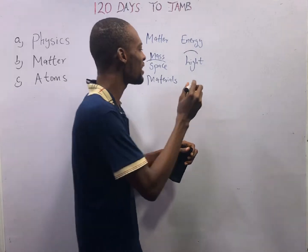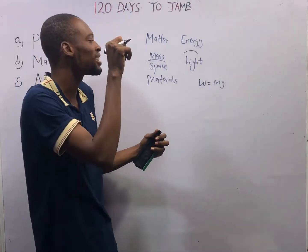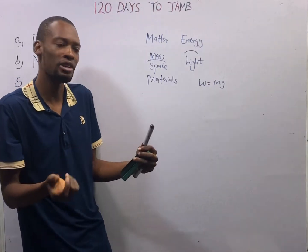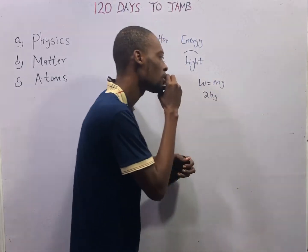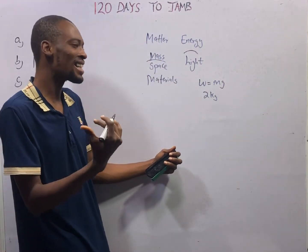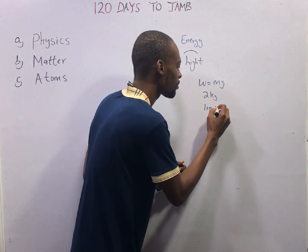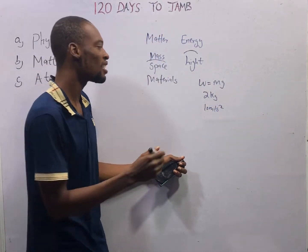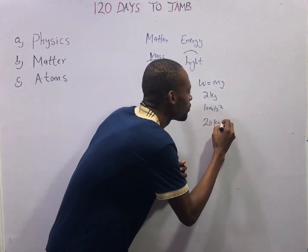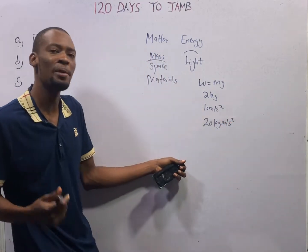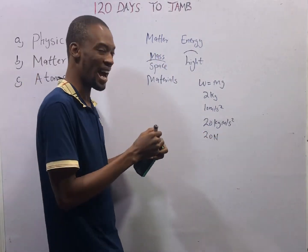Mass is different from weight. Weight is mass times gravity. Gravity is a force that brings all objects down; when it acts on a mass, you have weight. The unit of mass is kilograms. If you have a body of mass 2 kg and take acceleration due to gravity as 10 m/s², this body will possess a weight of 2 kg × 10 m/s² = 20 kg·m/s², also referred to as 20 Newtons — a unit of weight and force named after Isaac Newton.